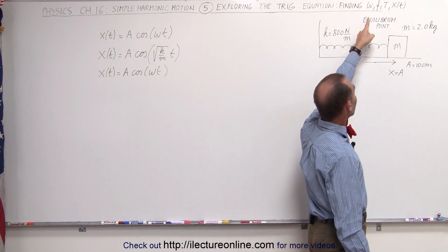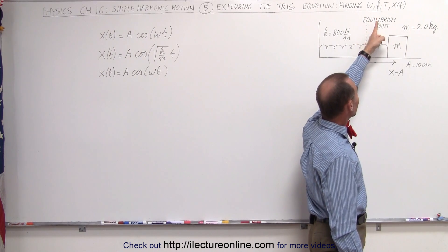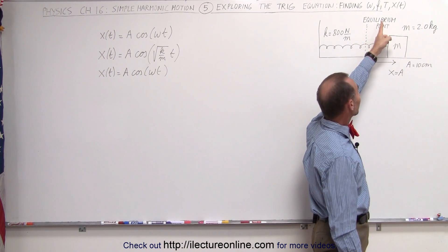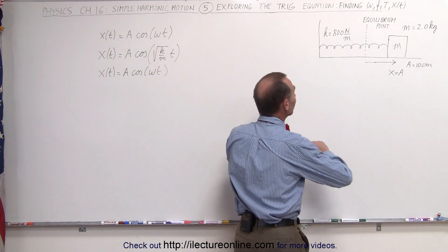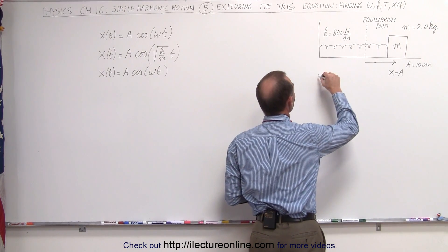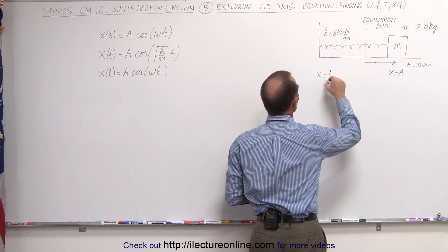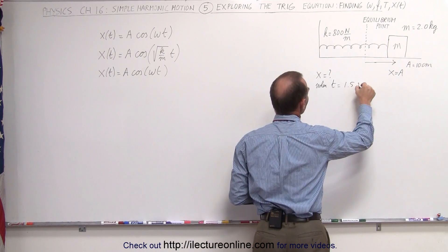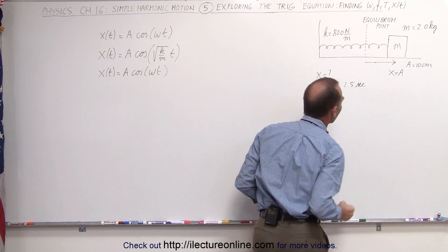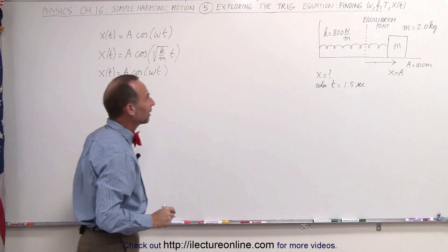We're supposed to find omega, the angular frequency, the frequency of oscillation, the period of oscillations, and the position as a function of time. Let's say when t equals 1.5 seconds. That's a good choice.